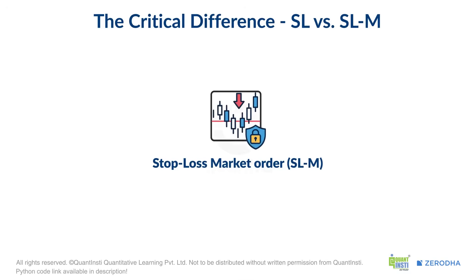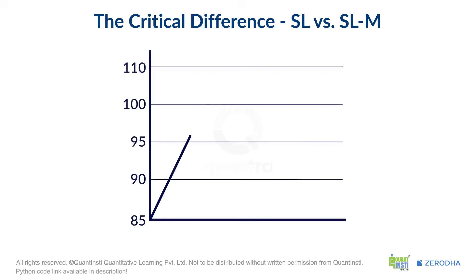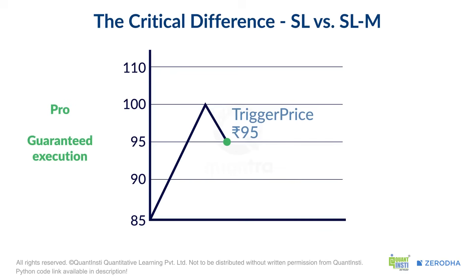Now let's look at the stop loss market order, or SLM. This one is simpler — it only has one price: a trigger price. Let's say it's Rs. 95. When the stock hits Rs. 95, a market order to sell is instantly sent to the exchange. The pro is guaranteed execution: once the trigger is hit, your position will be sold at the next available price. The con is something called slippage. In a volatile market, that next available price might be Rs. 94.80 or Rs. 94.50, which is lower than your trigger. You get out for sure, but the price might be slightly worse than you hoped.